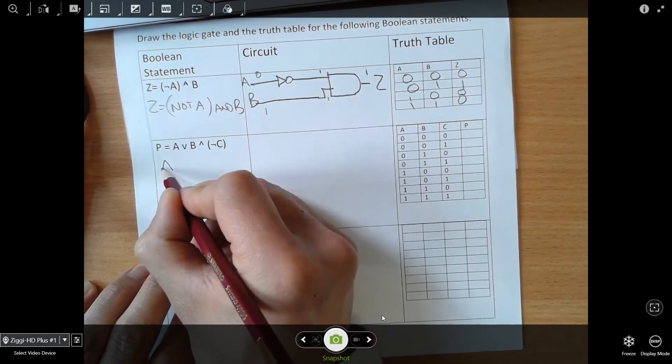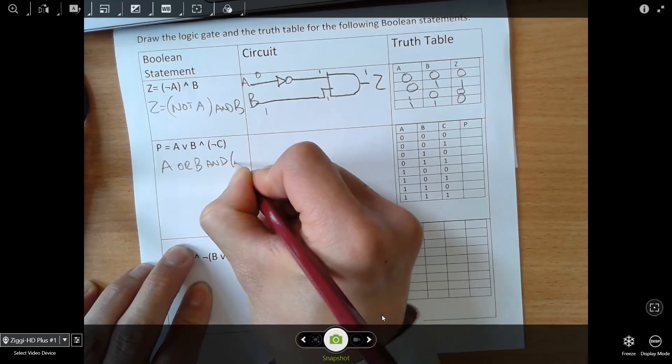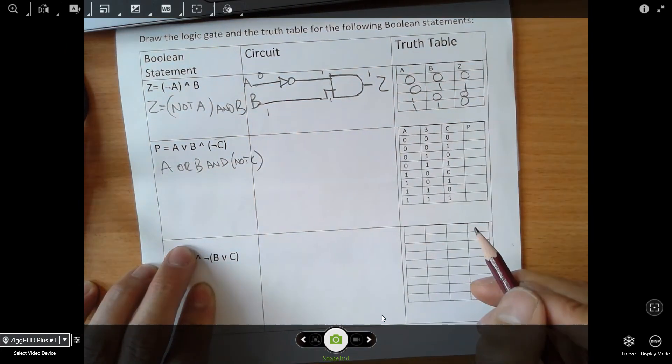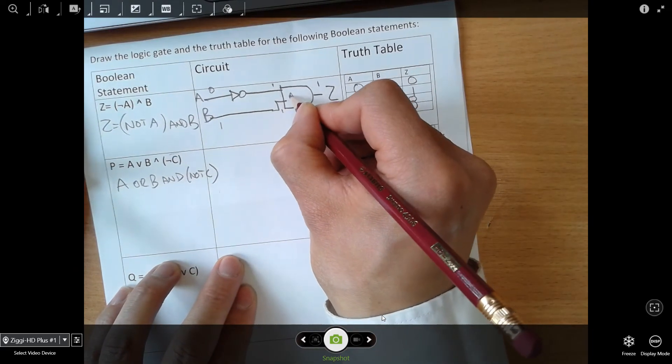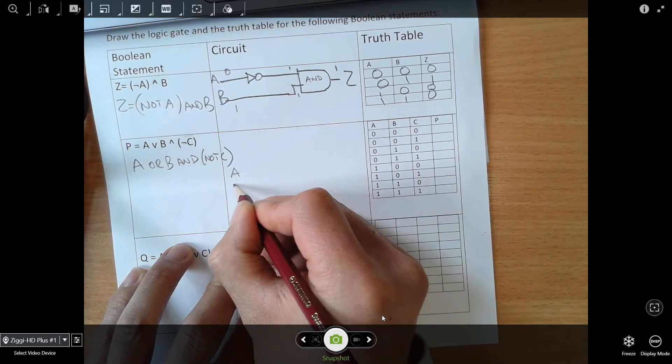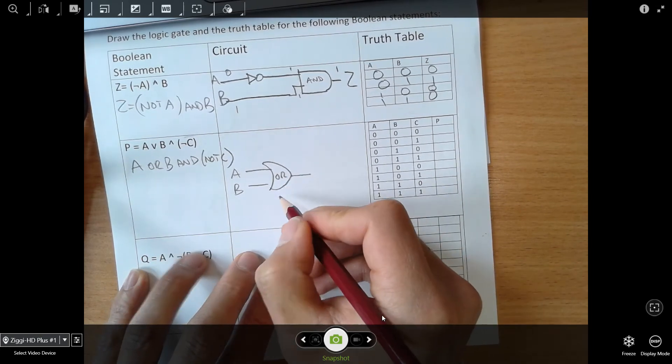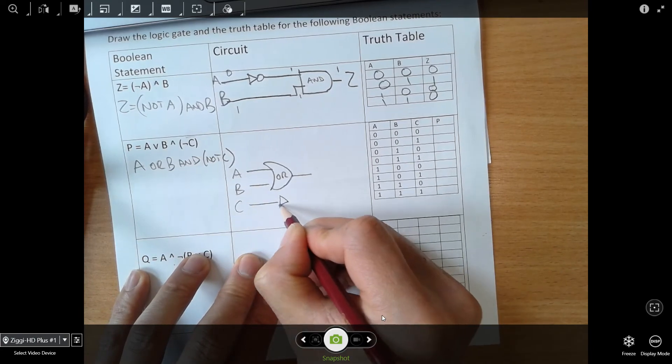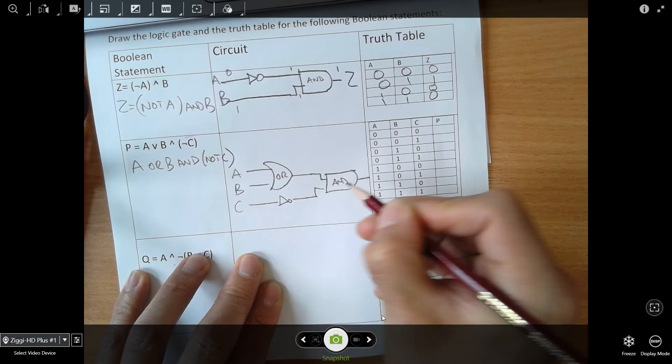Here, it's going to be A OR B AND NOT C. In other examples, they sometimes put apostrophe C, sometimes put a C with a bar over the top for NOT. But this is how we're going to write it. Let's do the A OR B first. A, B, this is going to go into an OR gate, and then we're going to AND that with the NOT of C. The C goes into a NOT gate, and that is going to go into an AND gate, and that is P.